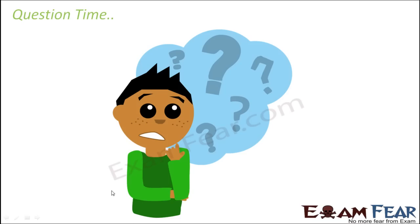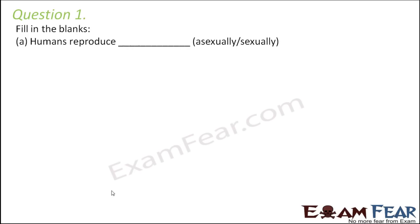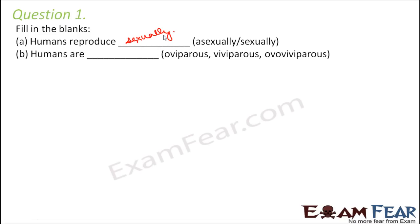Question number one: fill in the blanks. Humans reproduce — asexually or sexually? As already mentioned, sexual reproduction is the only mode of reproduction in human beings, so it is obviously sexually. Next: humans are oviparous, viviparous, or ovo-viviparous?